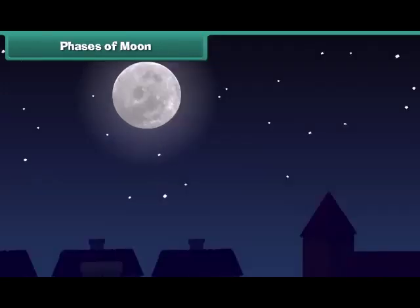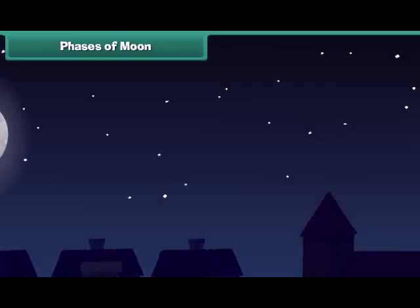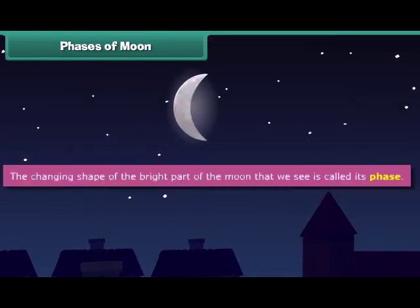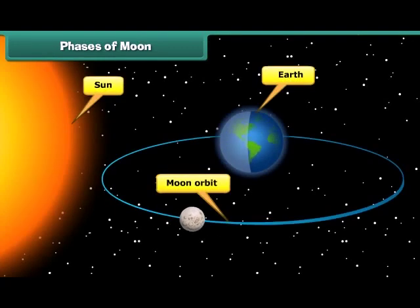You must have noticed that the moon does not always appear as a perfect circle. Do you know why? Because it goes through phases. The changing shape of the bright part of the moon that we see is called its phase. Sunlight strikes the moon at different angles throughout its journey around the earth. The part of the moon facing the Sun is lit whereas the part facing away from the Sun is in darkness.